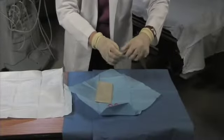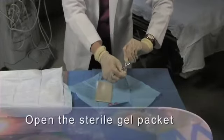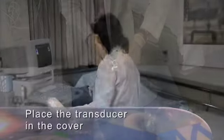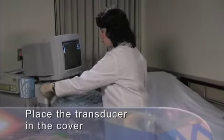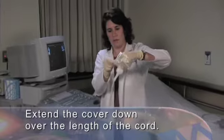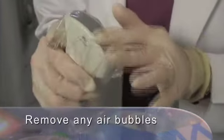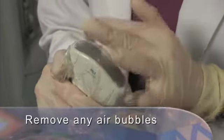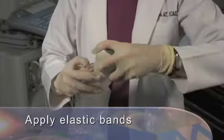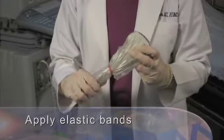Using the single person approach to applying a general purpose transducer cover, open the sterile gel packet, then create an opening in the cover and apply gel. Once the gel is in the cover, place over the array of the transducer and extend the cover down over the length of the cord, ensuring proper sterile technique. Check carefully and remove any air bubbles that are between the transducer face and the cover. While remaining in the sterile field, apply enclosed sterile elastic bands to secure the cover in place.